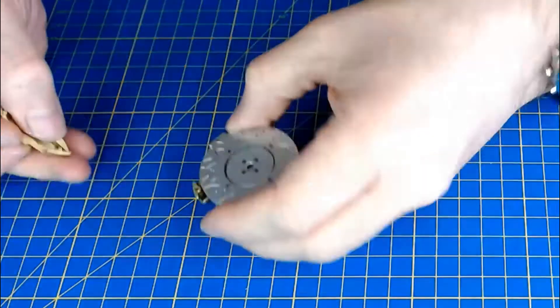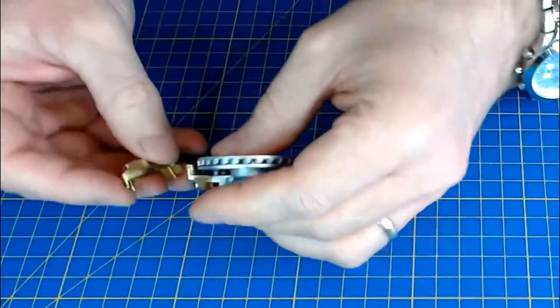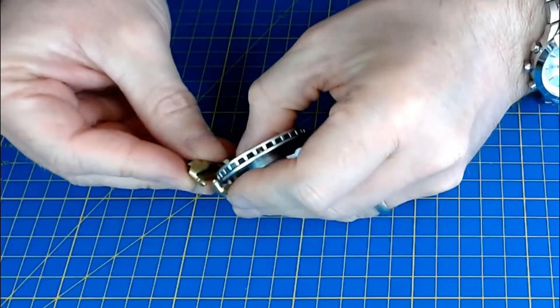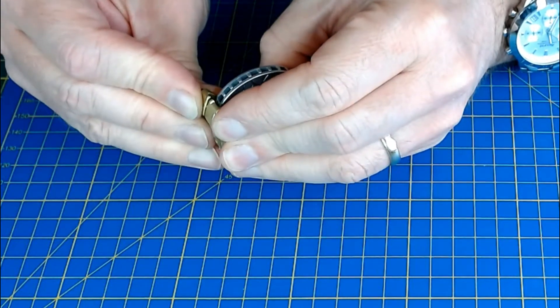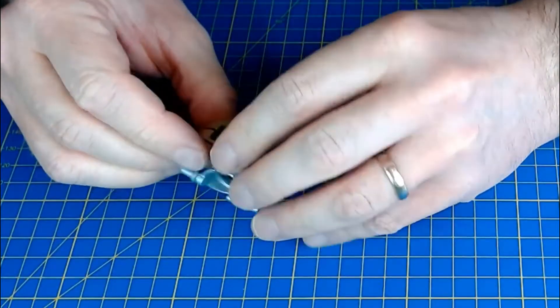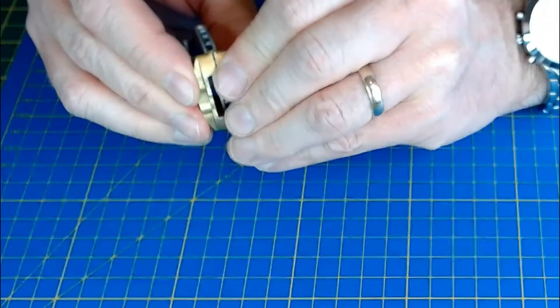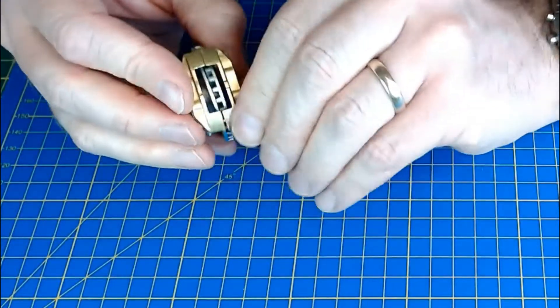Then the Brembo caliper is going to be going on. It doesn't need glue, it says. It's actually a tight fit - be careful with that, don't break those pins off.